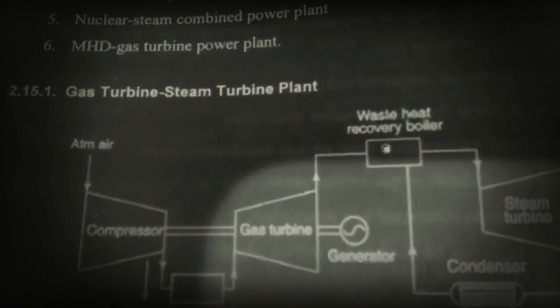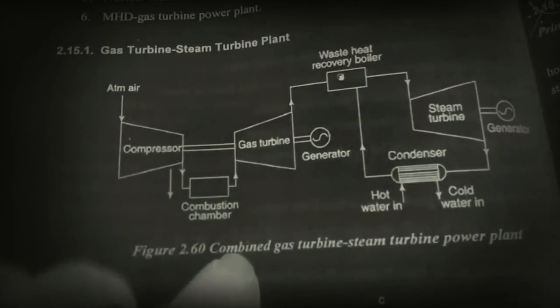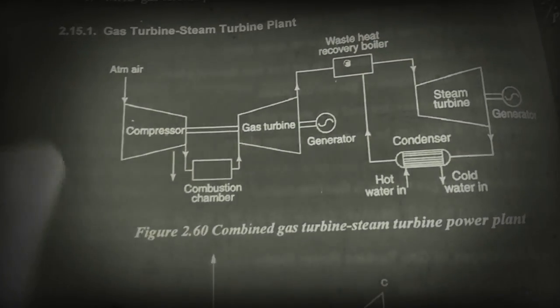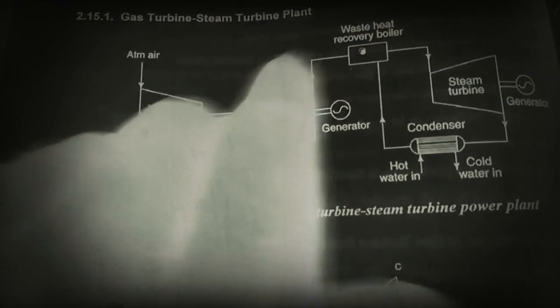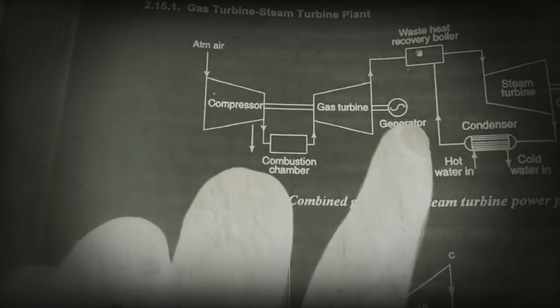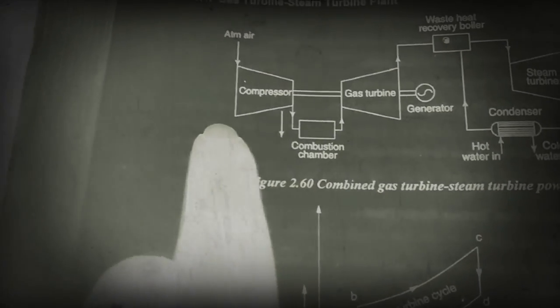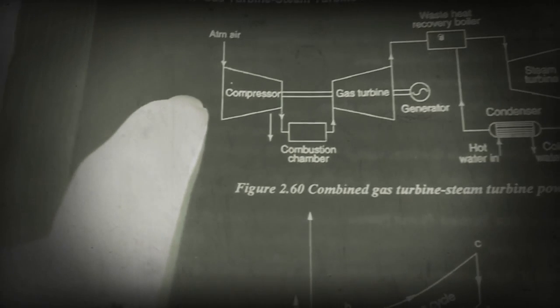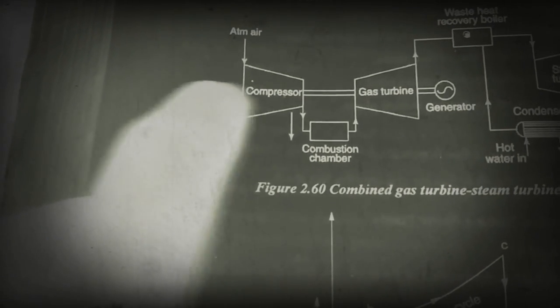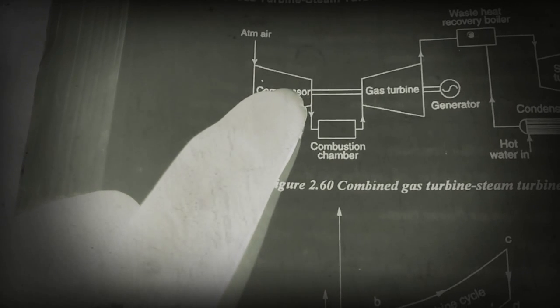Now we are going to see the gas turbine steam turbine plant. Here, up to this point it is a gas turbine system, and after that it is the steam turbine system. So this portion is the steam turbine and this portion is the gas turbine. What happens is the air from the atmosphere